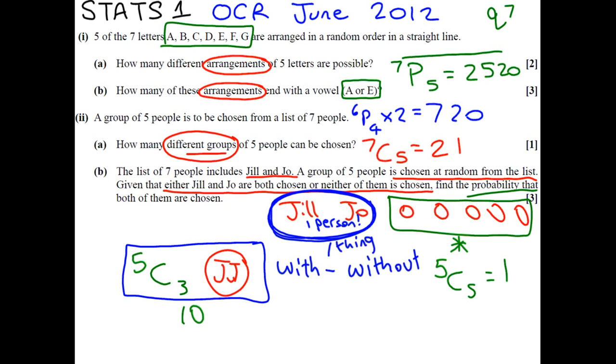So, it's 10, the probability that they're chosen, over all the possible combinations. Now, it says, given that, they're chosen or they're not chosen. That means what we've just talked about are the only possibilities we need to think about. So, it's 10 over 10 plus 1, which gives you a final answer of 10 over 11.